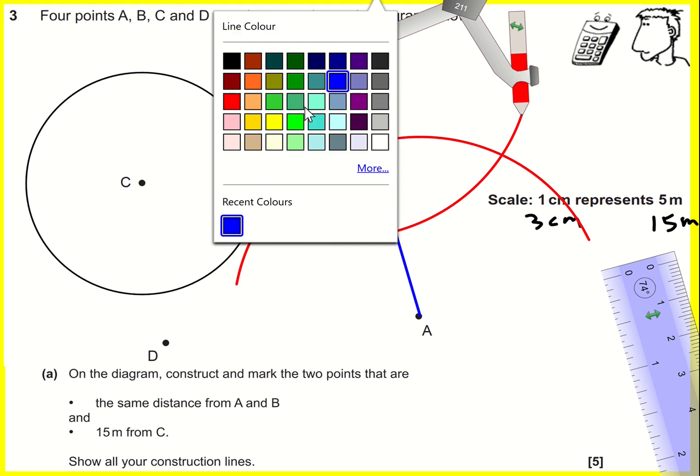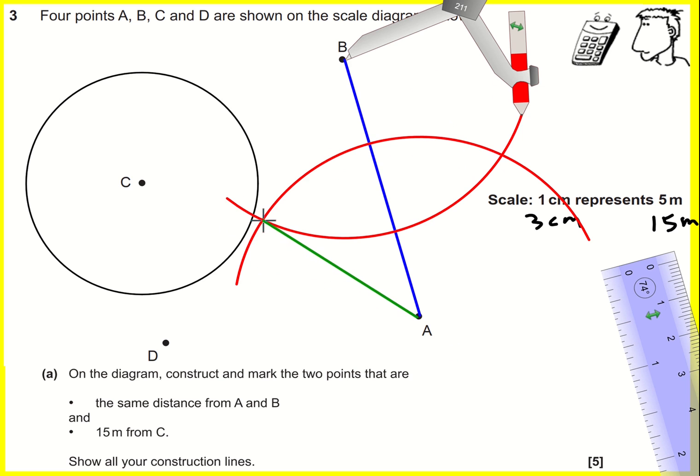Essentially, although you don't draw this, we've created a rhombus here. When we connect it, it will necessarily split the rhombus into two equal parts, split the line into two, and give us our perpendicular bisector.